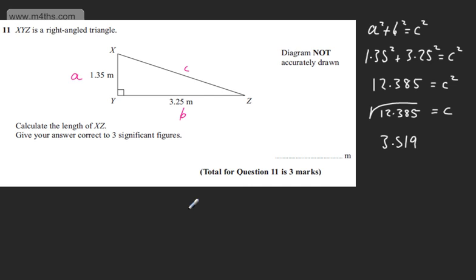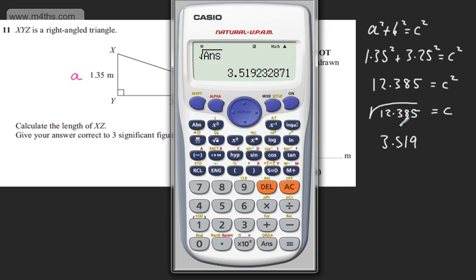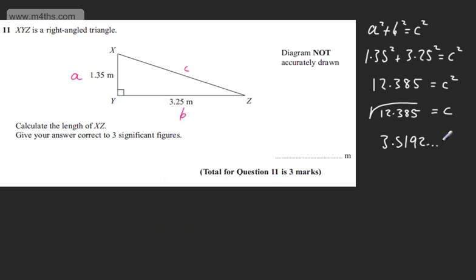So we can say 3.519, and they want this to have three significant figures. Let's just write some of this out, that is equal to C. I'm going to round this to three significant figures. The third significant figure is the 1, so I can either have 3.51 or 3.52. I'm going to round it up to 3.52, as we've got a 9 after the 1.